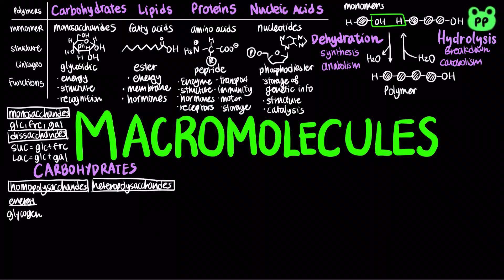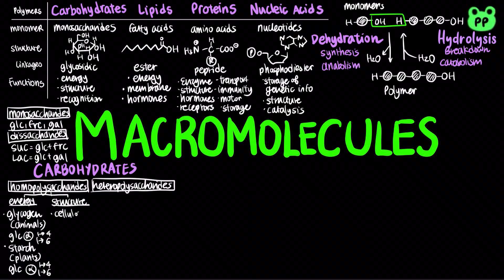Homopolysaccharides that function in energy storage include glycogen in animals, which consists of glucose linked by alpha-1,4 and alpha-1,6 bonds. Starch is the energy-storing polysaccharide found in plants, also consisting of alpha-1,4 and alpha-1,6 linkages of glucose. Structural homopolysaccharides include cellulose, which consists of beta linkages of glucose. The enzymes in humans' digestive system can only hydrolyze alpha linkages and cannot hydrolyze beta linkages.